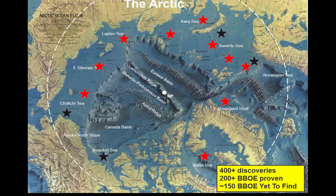The roller coaster goes down, but then recently the roller coaster goes up again. This green star here is in the Kara Sea, and many of you will have read about the recent discovery made by the Rosneft-ExxonMobil partnership in that area. This is a significant discovery — we don't know how significant — but it's certainly a large structure with more to come, and there are a lot more structures like it. This helps illustrate the potential of the Arctic and why companies are interested in it.